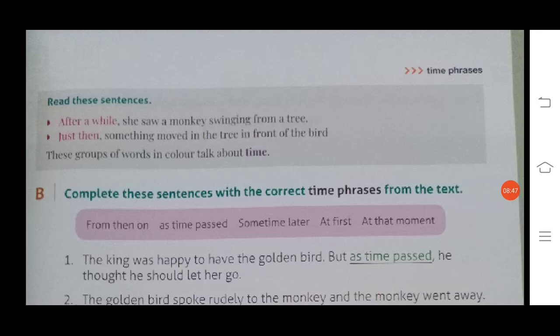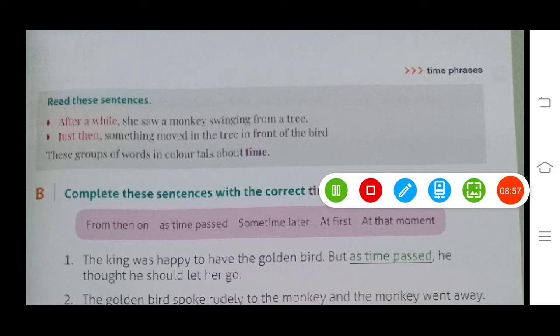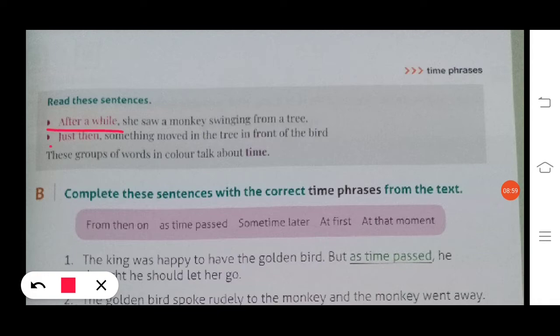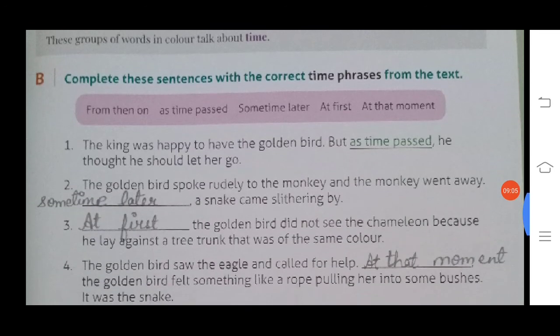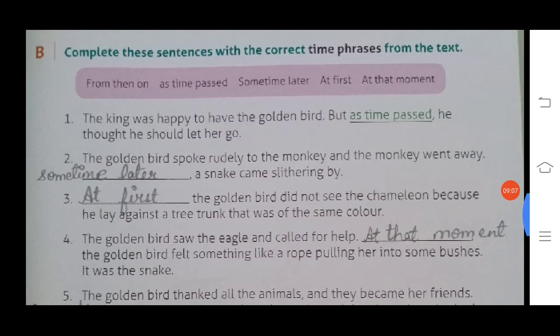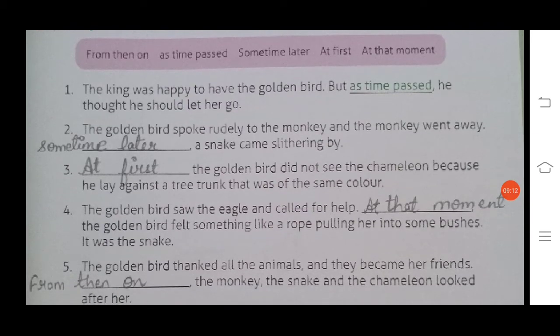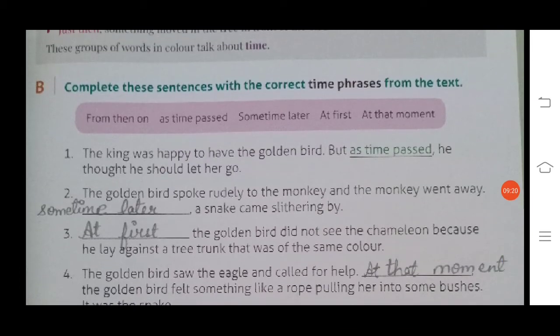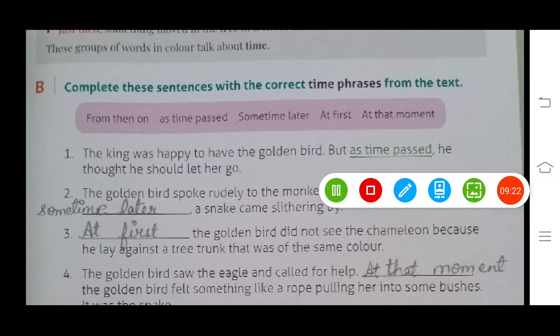Read these sentences. After a while she saw a monkey swinging from a tree. Just then something moved in the tree in front of the bird. These are time phrases—after a while and just then—used in talking about time. We will do exercise B: complete these sentences with the correct time phrases from the text. Number one: the king was happy to have the golden bird, but as time passed, he thought he should let her go.